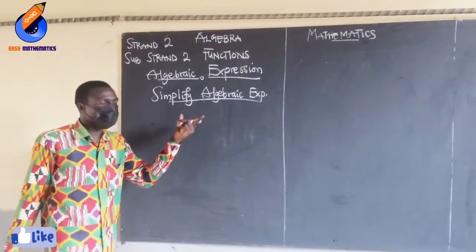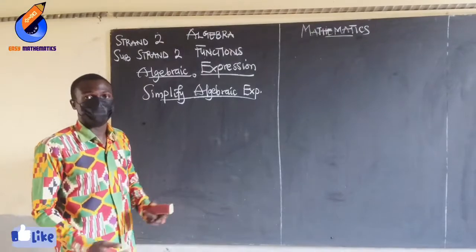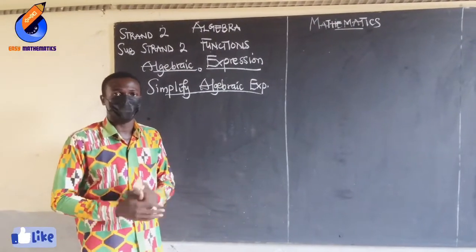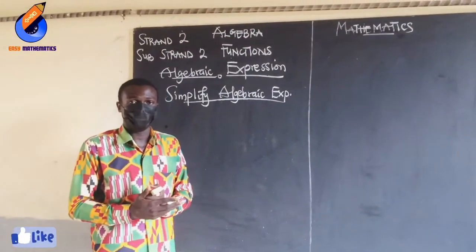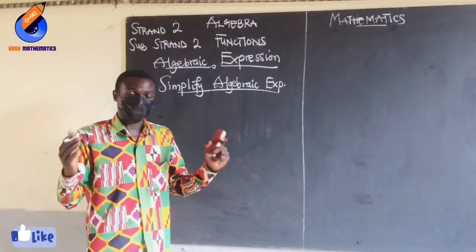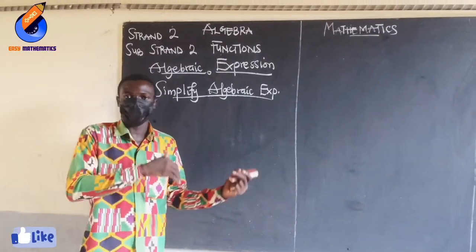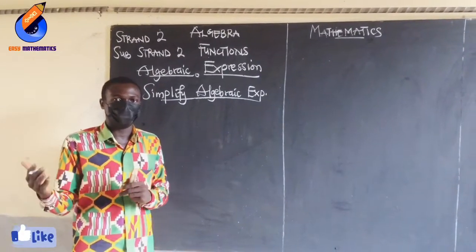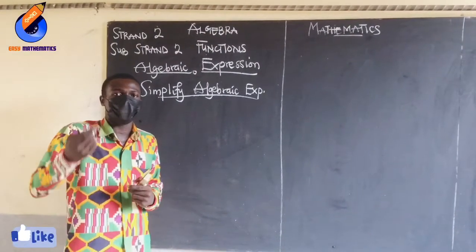We have been asked to simplify algebraic expressions. How can we do this? First of all, what is an algebraic expression? An algebraic expression is a mathematical statement having a number and alphabet — that is, letters. In mathematics we call them variables.